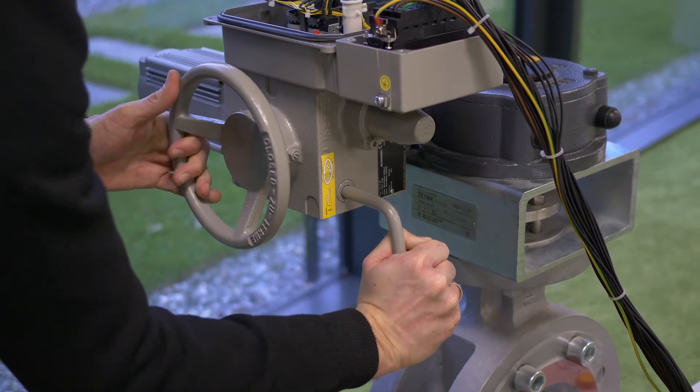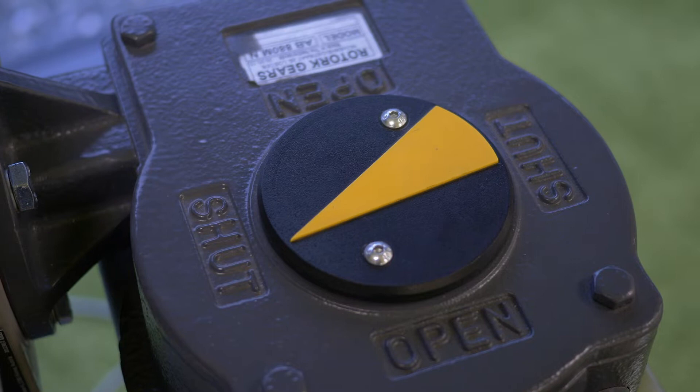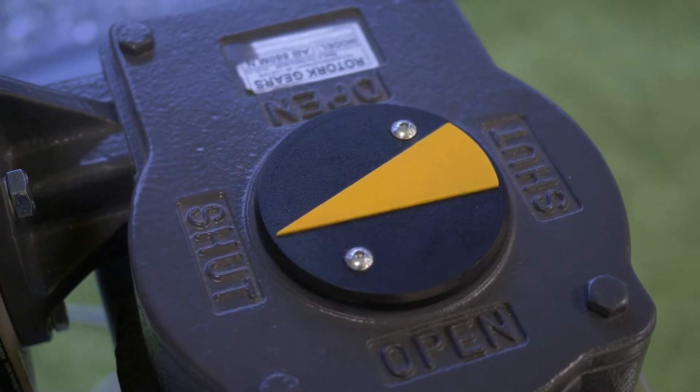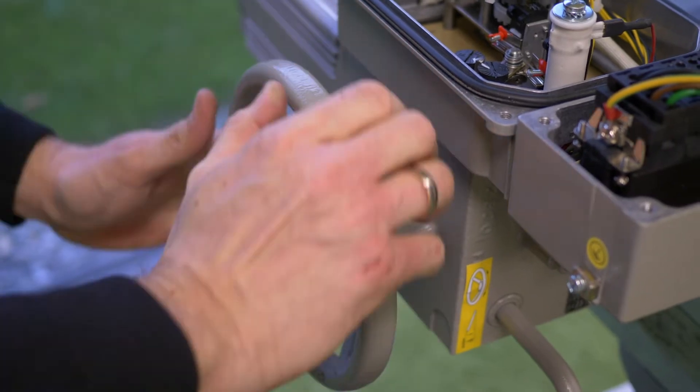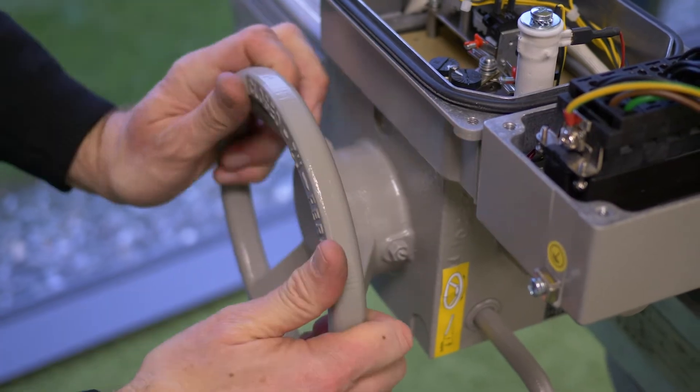Engage the manual override and turn the actuator to close position. After reaching close mechanical end stop, rotate hand wheel half turn back.